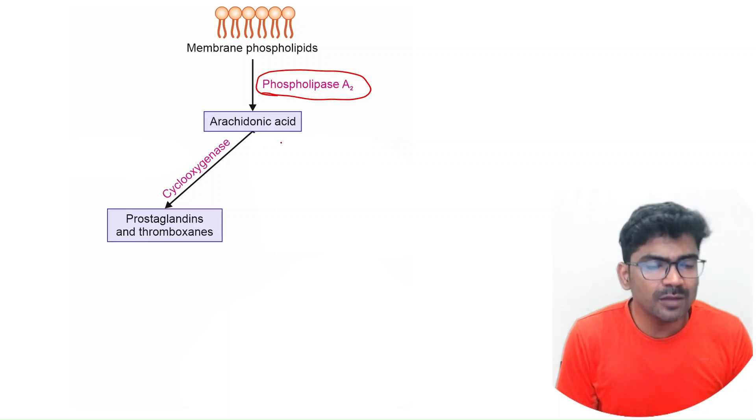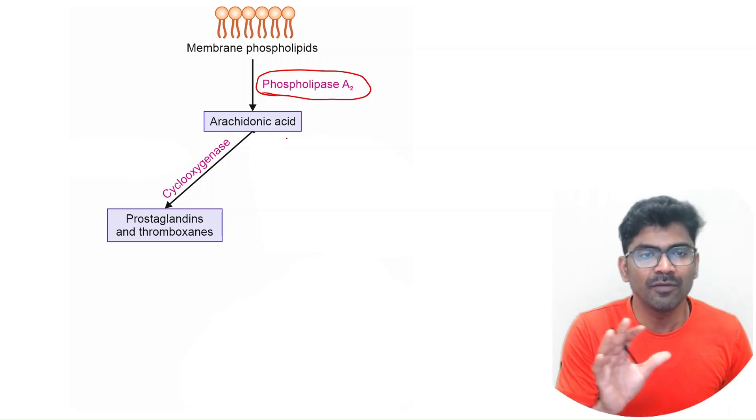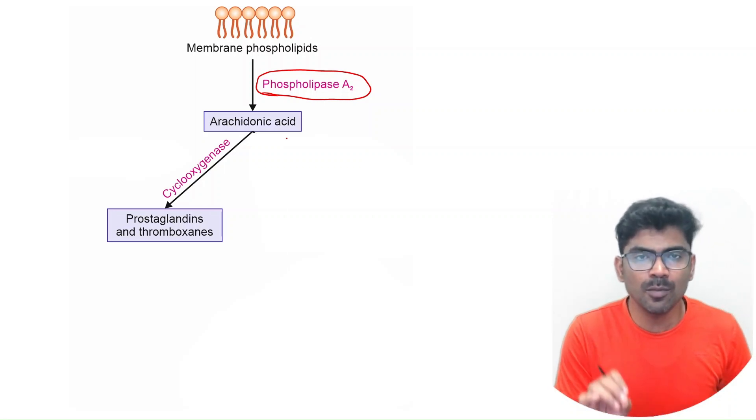Arachidonic acid, a 20-carbon omega-6 fatty acid, is the usual precursor for prostaglandins, thromboxane, lipoxins and leukotrienes.